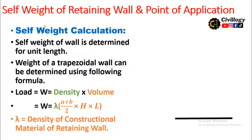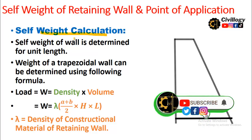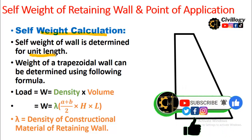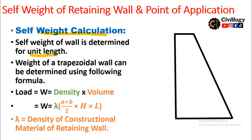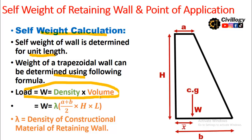For the self-weight calculation of a retaining wall, the weight is determined for unit length — that is, per meter or per feet. The weight of a trapezoidal wall is determined using the formula W equals density multiplied by volume. Lambda is the density of the construction material of the retaining wall. There are different types of retaining walls, and the link for that video is given in the description.